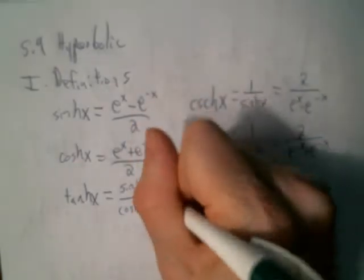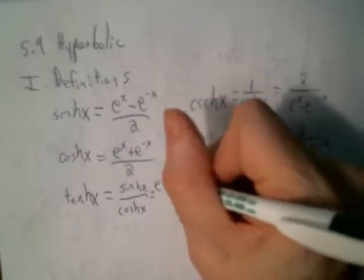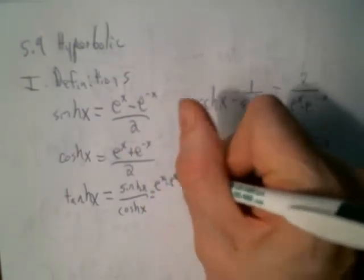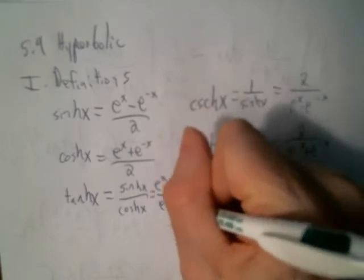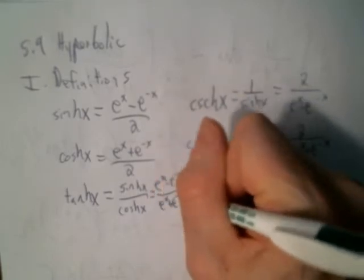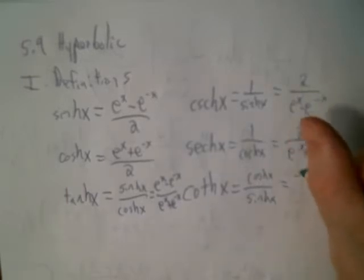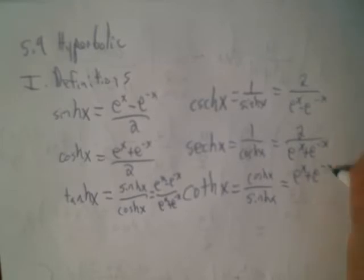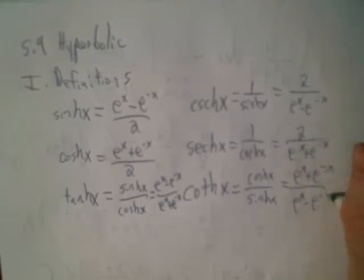Hyperbolic tangent is (e^x minus e^(-x)) all over (e^x plus e^(-x)). And hyperbolic cotangent will be (e^x plus e^(-x)) all over (e^x minus e^(-x)).